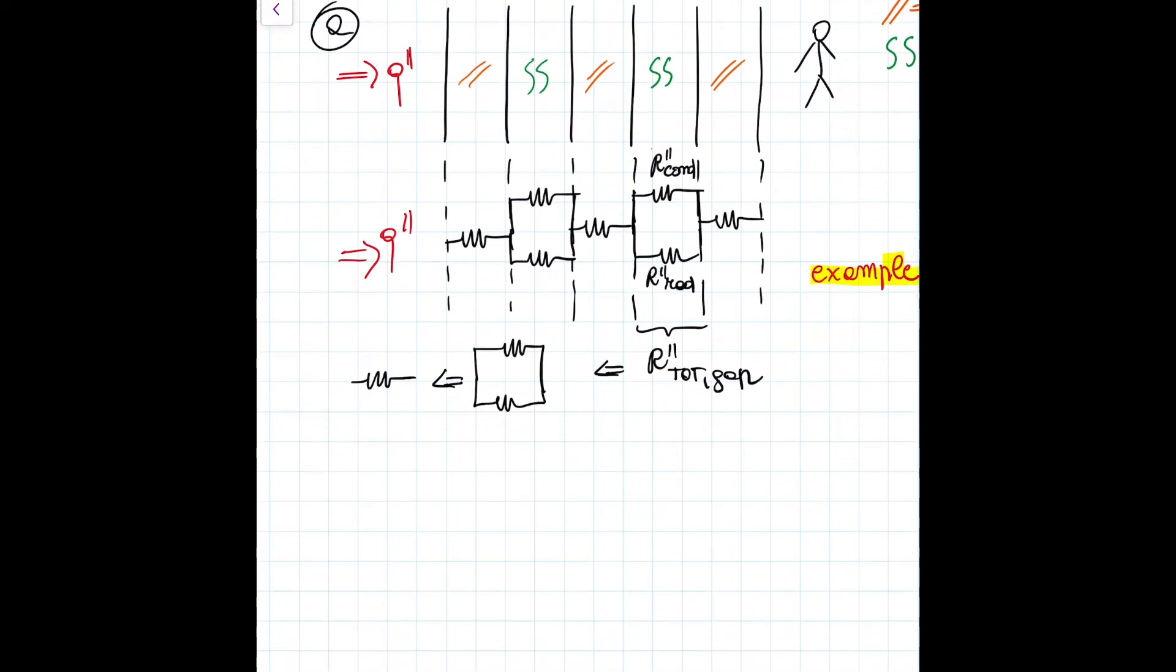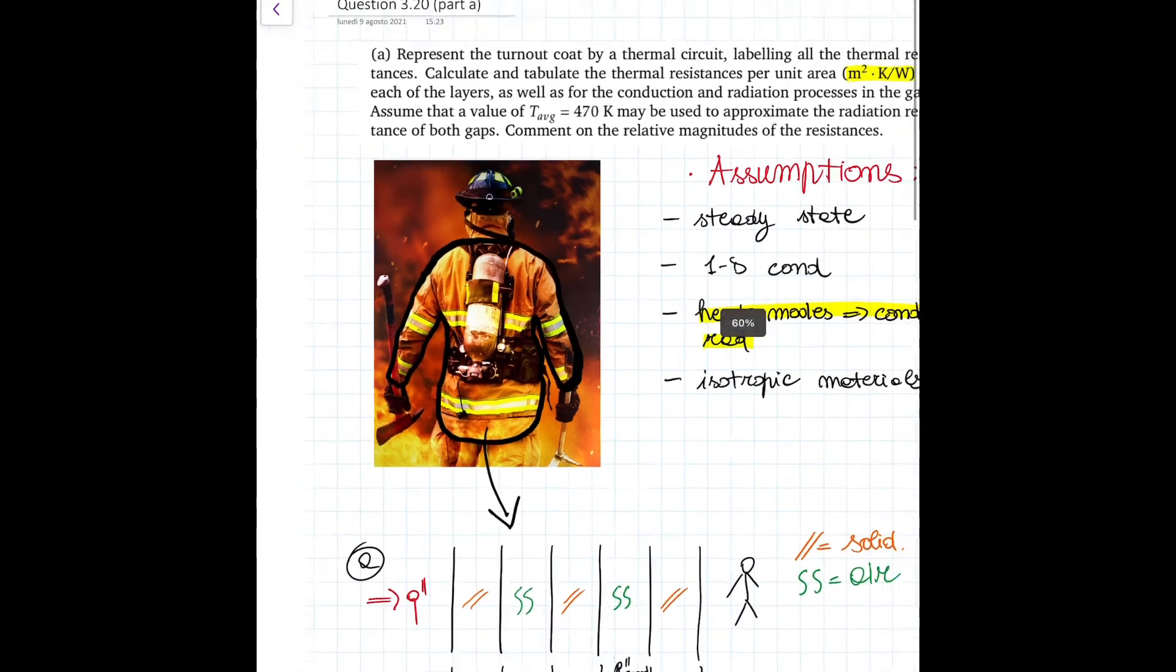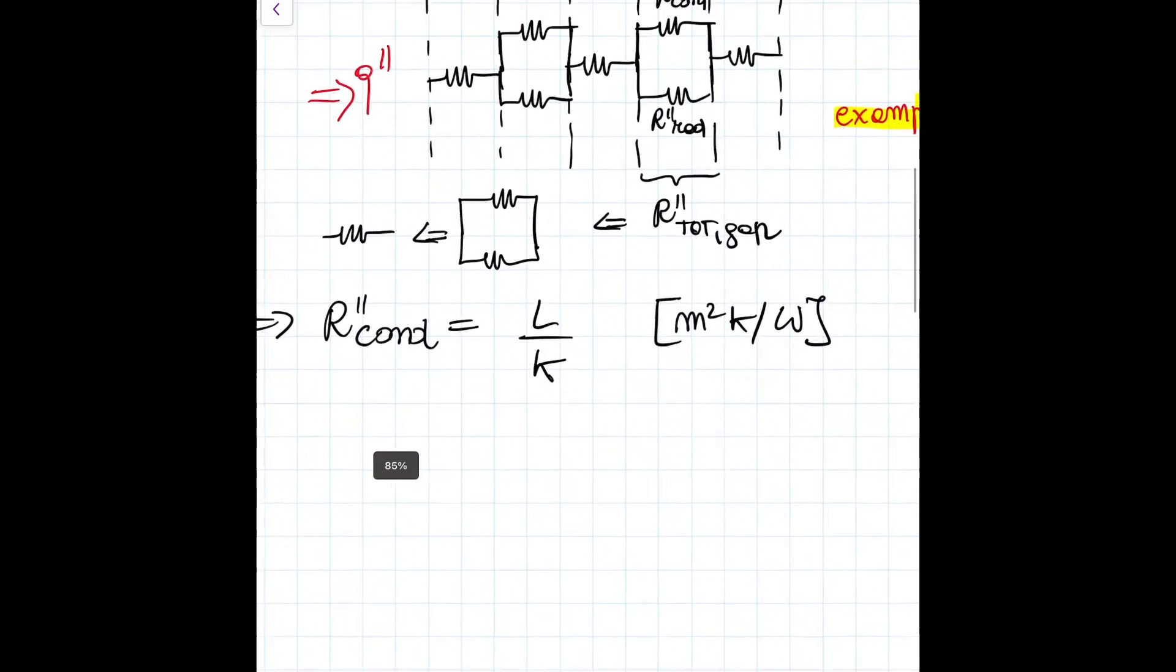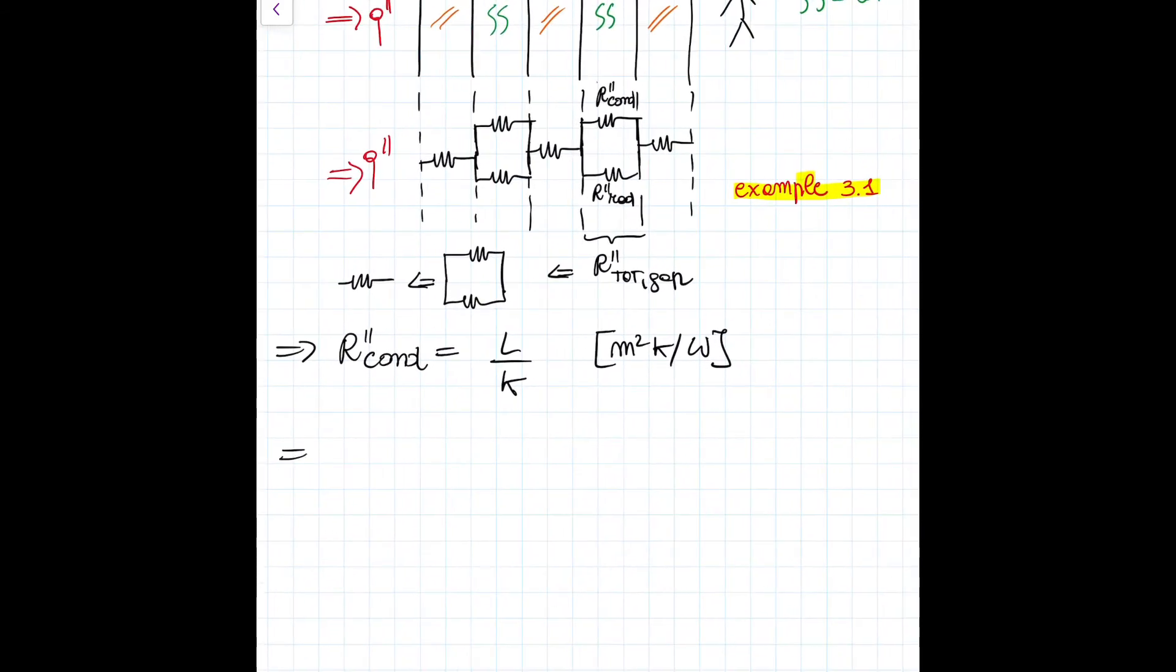Let's now start assessing all the resistances of the system. Let's start with the resistances exerted against conduction. We know that they can be considered to be L over K, where L is the characteristic length of each layer and K is the conductivity. Remember that we are dealing with meters squared Kelvin over watts, and it is actually specified in the question as I have allotted here.